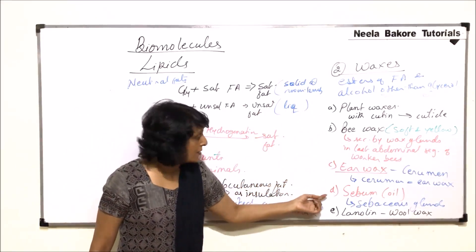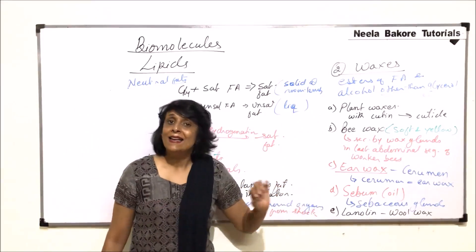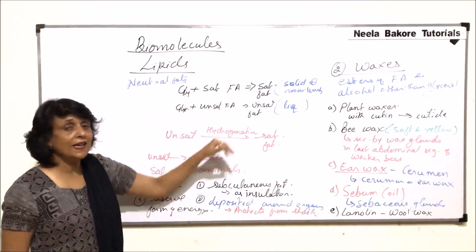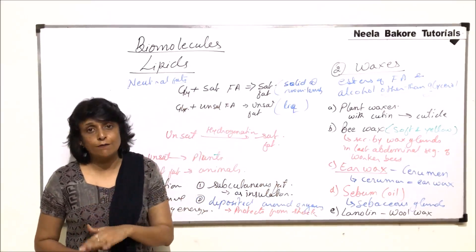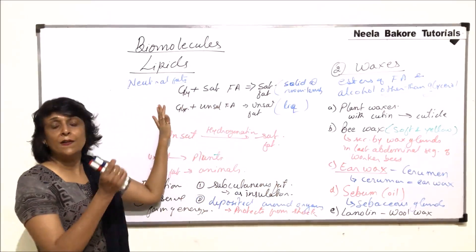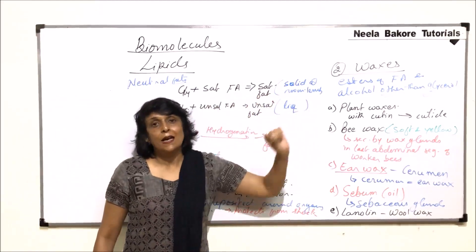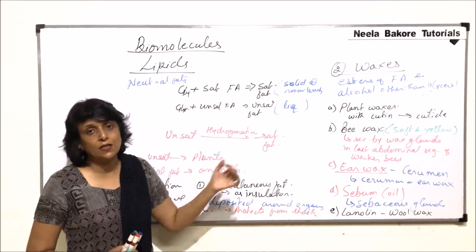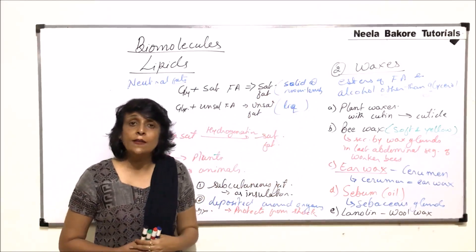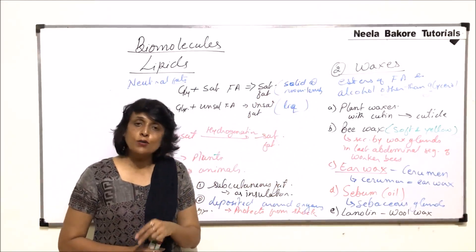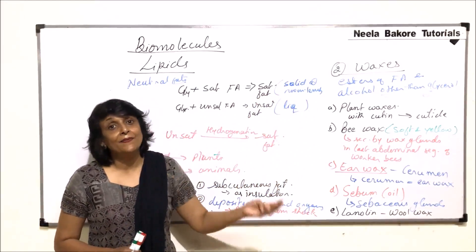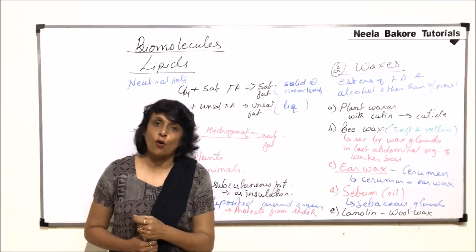So here we have only plant waxes, bee waxes, ear wax, sebum or oil, and lanolin. So with this we are done with simple fats which included the neutral ones or true fats and waxes. Now in the next category or next part, we would start with the compound or conjugated fats and then the derived fats, that is sterols and all.